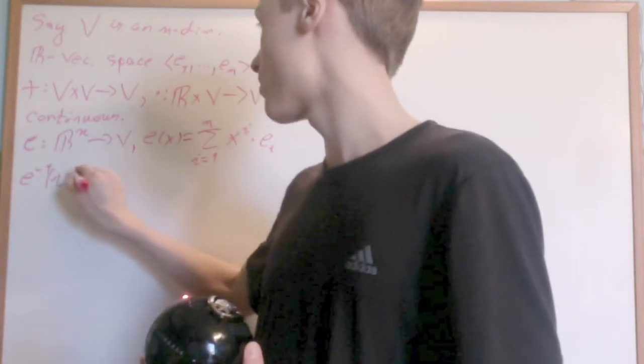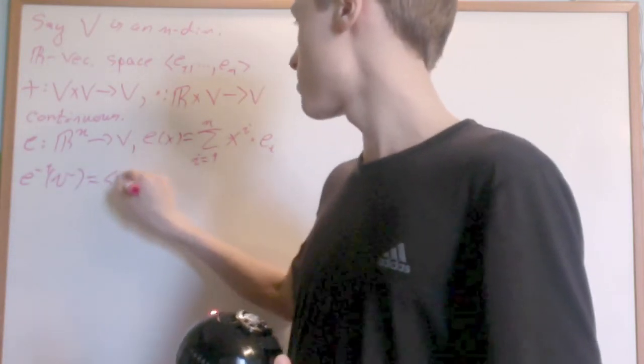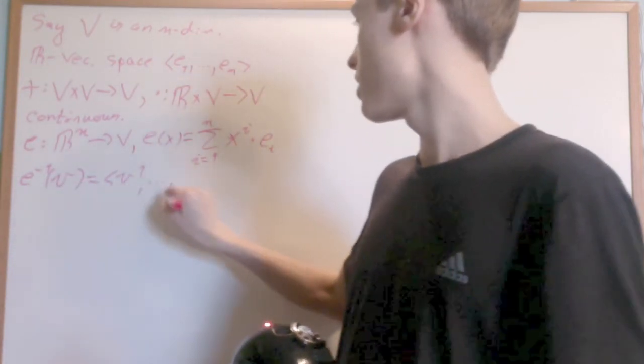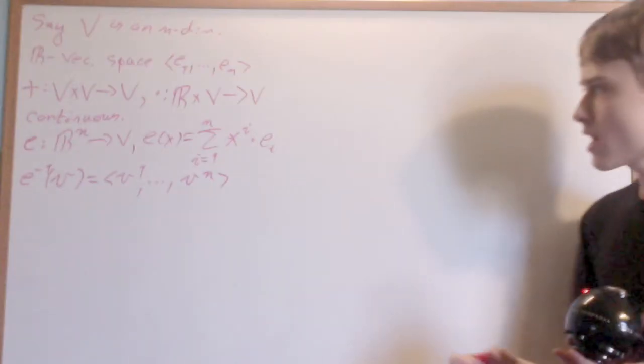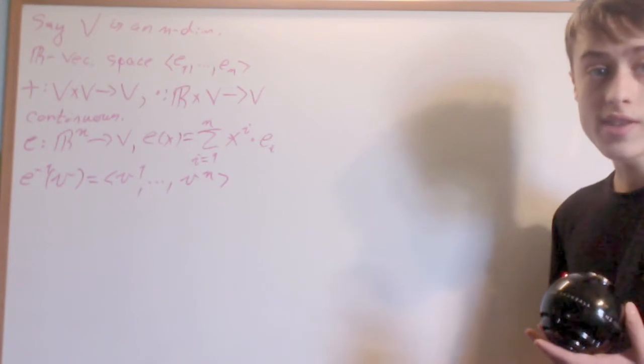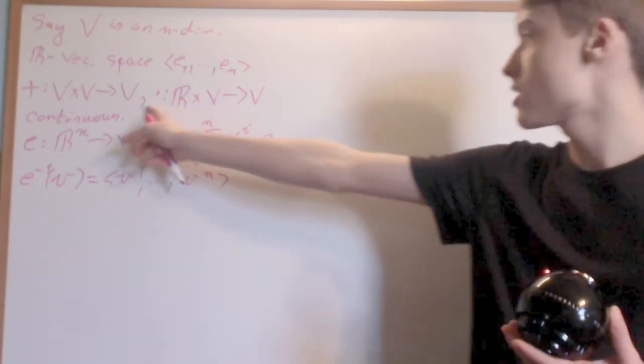E inverse of a vector V is just its components V1 to VN. It's just its representation in the real numbers. I'll leave it to you to verify that this is continuous only knowing these two.